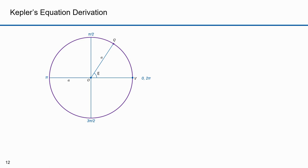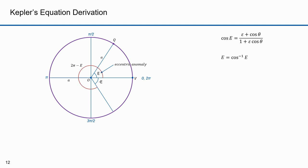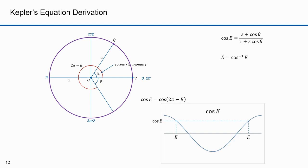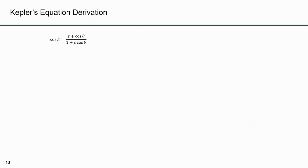These are nice equations but there's an ambiguity. If we derive cosine E from theta and take the arccosine, there are two possible values of E: E and 2π minus E, since cosine E equals cosine(2π minus E). The same ambiguity exists with sine. A tangent function has the same issue, but not if we divide the angle by 2 — so we'll use E over 2.